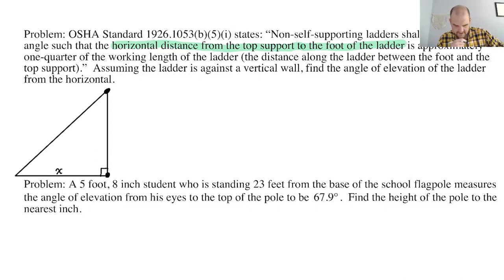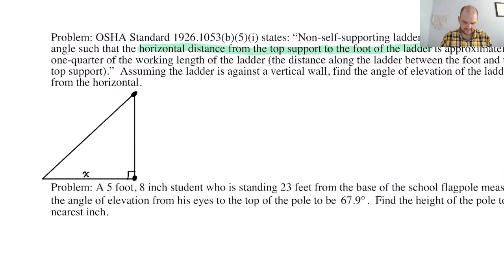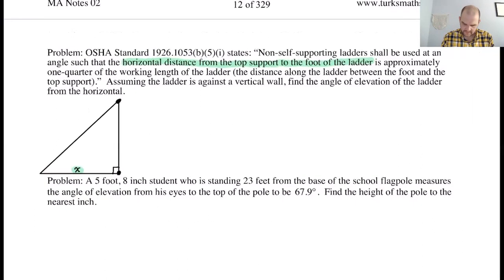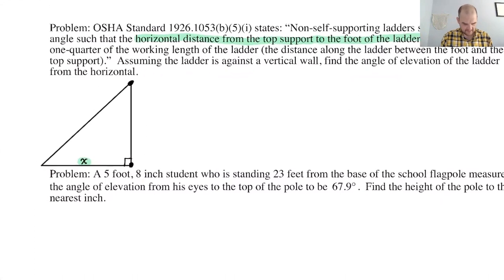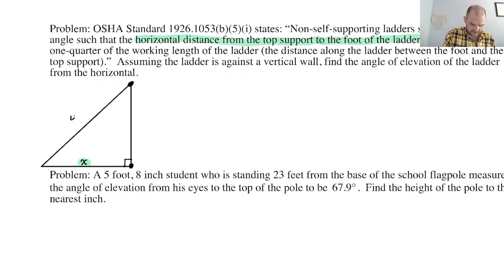The horizontal distance from the top support to the foot of the ladder is approximately one quarter the working length of the ladder. Okay, so if this is x, this I made x. Now this is supposed to be one fourth the working length of the ladder. The working length of the ladder is the ladder. So if this is x, then this part here, the ladder itself, would have to be four x.